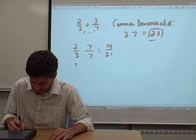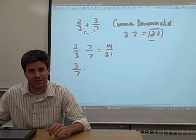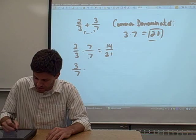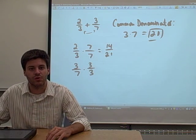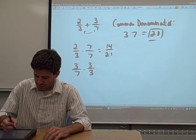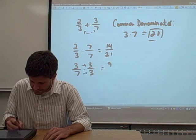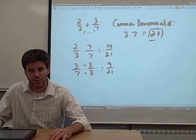Then we have to look at 3 sevenths. We want to convert 3 sevenths into a fraction that has a denominator of 21. So to do this, we multiply both the numerator and the denominator by 3. Multiply straight across again. 3 times 3 equals 9, 7 times 3 equals 21.